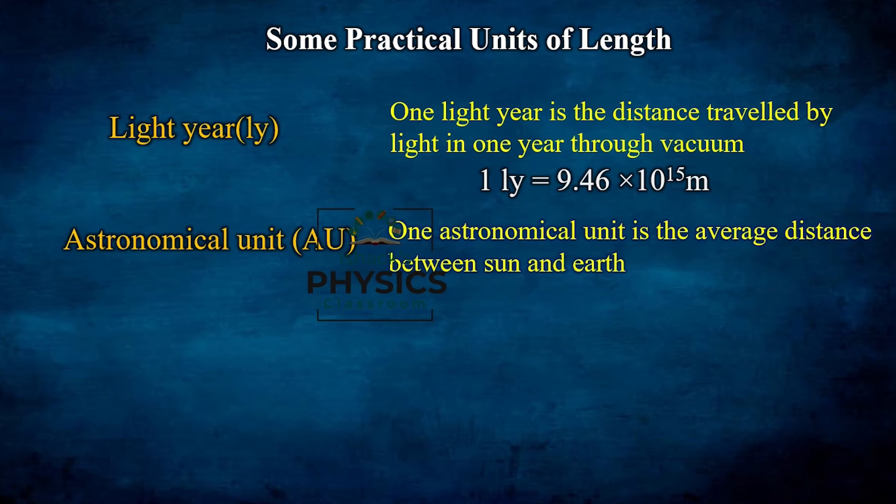In Earth's case, the semi-major axis and semi-minor axis differ by only about 1.2 kilometers, so the orbit is almost circular — but not a perfect circle. Because of this elliptical shape, we use the average distance between the Sun and Earth, which defines one astronomical unit.